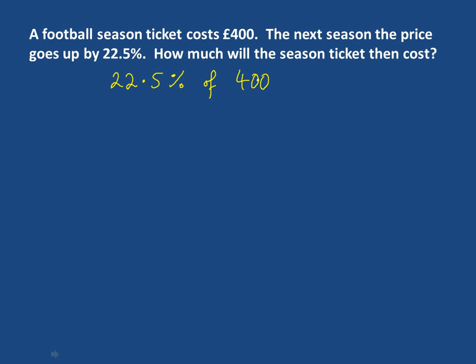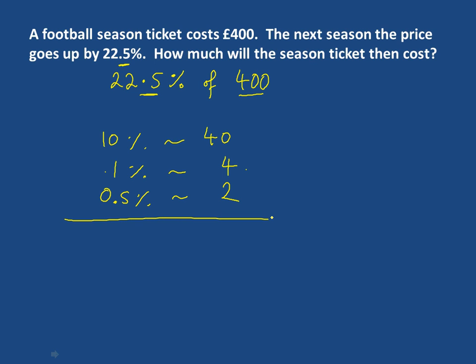Same method as before. We're going to start with our 10%. So we take our 400, divide it by 10, you get 40. Then we find our 1% — divide it by 10 again, you'll get 4. This time there's something extra: we have a 0.5%. So we're going to find what half a percent is. Well, if 1% is 4, then half of that — half a percent — will be 2. So we've now found all the bits we need.